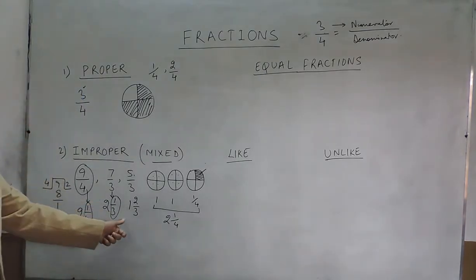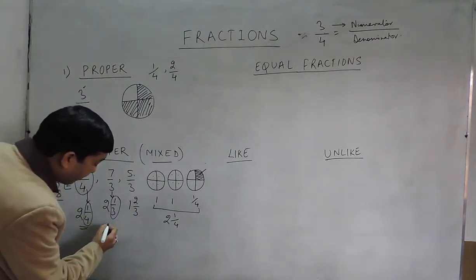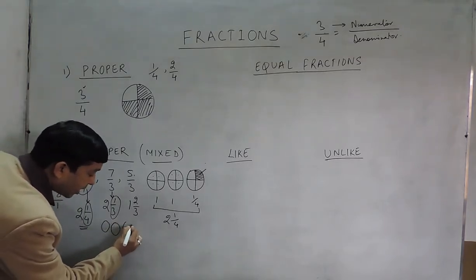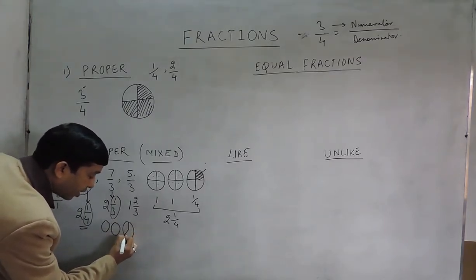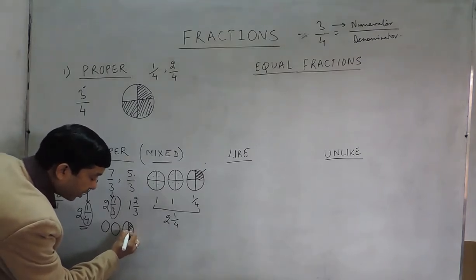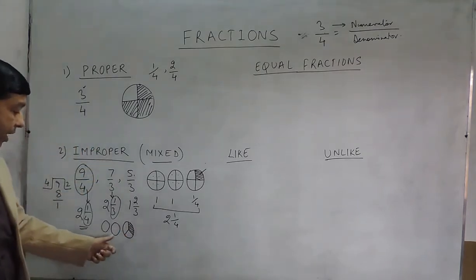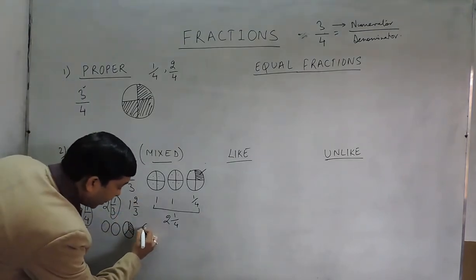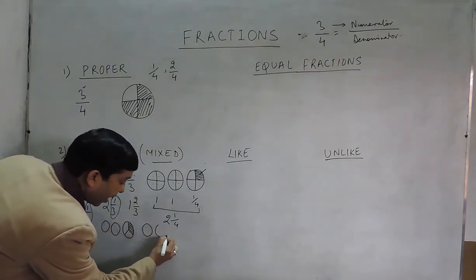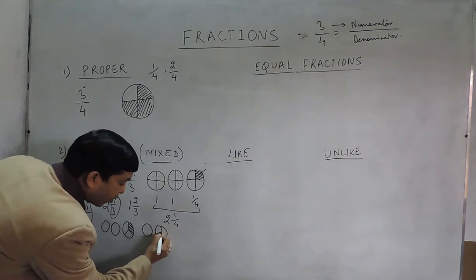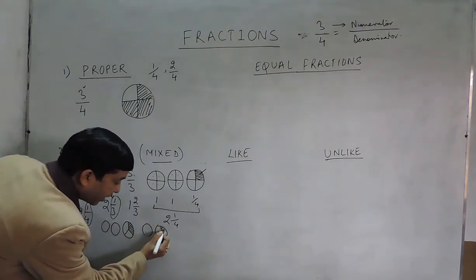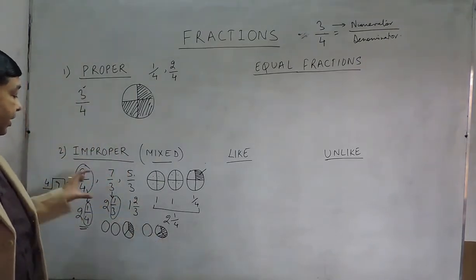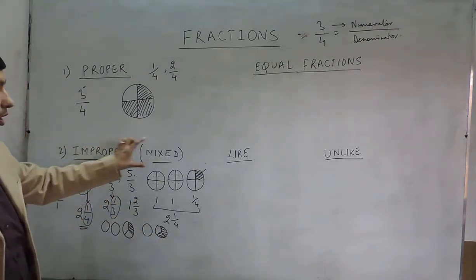When I say 2 and 1 upon 3, that means one complete object, then again one complete object, and in the third object we are taking one portion out of three. So this is the meaning of 2 and 1 upon 3. When I say 1 and 2 upon 3, it is one complete object plus, out of the three portions in the second object, we are taking two portions. This is the meaning of improper or mixed fractions.